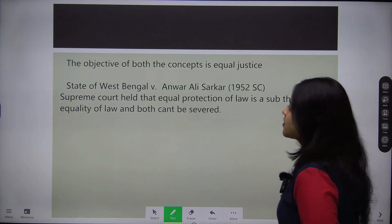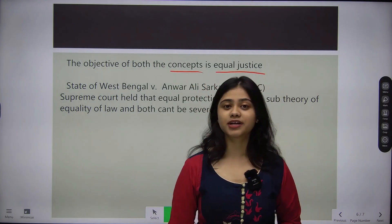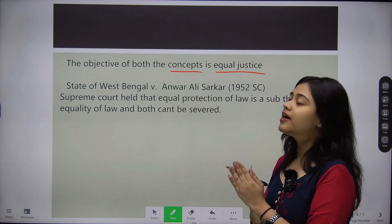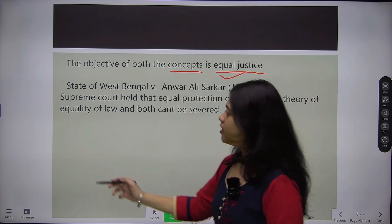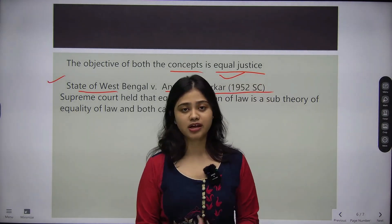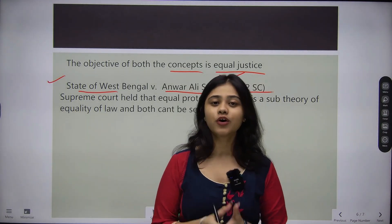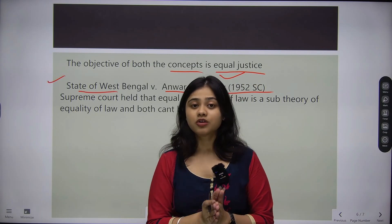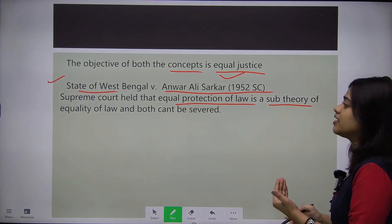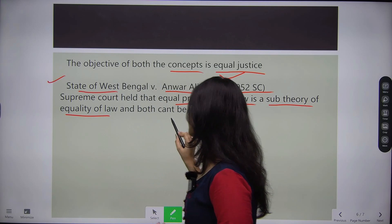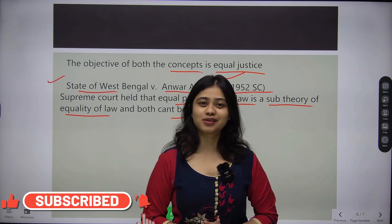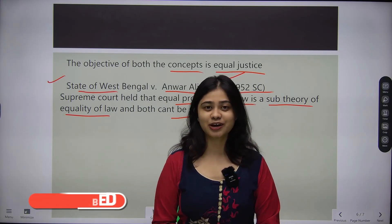The object of both concepts — equality before law and equal protection of law — is equal justice. Both have one goal, one purpose: to provide equal justice. A landmark case is State of West Bengal vs. Anwar Ali Sarkar, 1952 (Supreme Court), in which the Supreme Court held that equality before law and equal protection of law are complementary to each other. Equal protection of law is a sub-theory of equality of law, and the two cannot be separated.